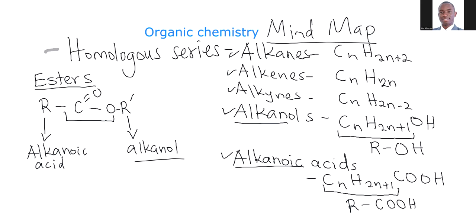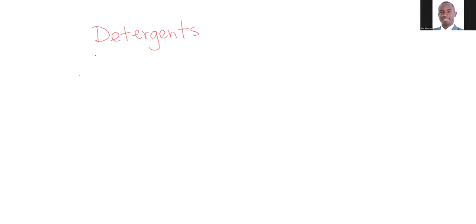Now let's move on to the next part. This is the first part of organic chemistry. The second part of organic chemistry is what we call the detergent side — detergents. Here we have two kinds. We have the soapy detergents and the soapless detergent. For the soapy detergents, you should remember about the examples and how the formula looks like.